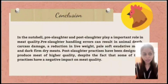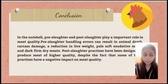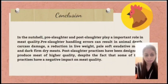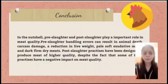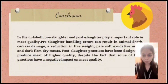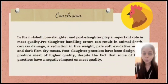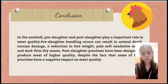In conclusion, pre-slaughter and post-slaughter handling play an important role in meat quality. Pre-slaughter handling errors can result in animal death, carcass damage, and a reduction in live weight. Pre-slaughter practices have been designed to produce meat of higher quality, despite the fact that some of these practices may have a negative impact on meat quality. That's all from us, thank you.